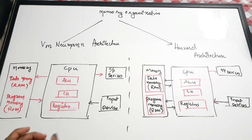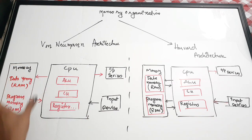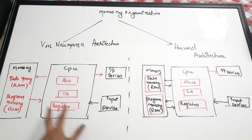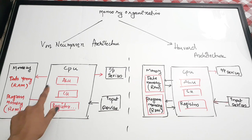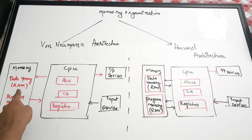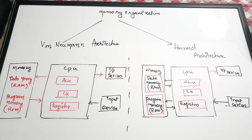In Von Neumann architecture, there is no separation between the data memory and the program memory. The instructions — that is, the program — and the data are stored in a single memory altogether. There is only a single memory with no differentiation or partition between data and program. The processor accesses this single memory using a single bus.